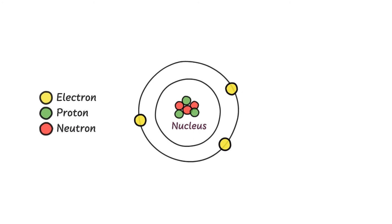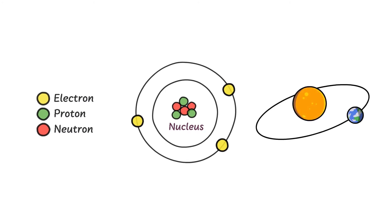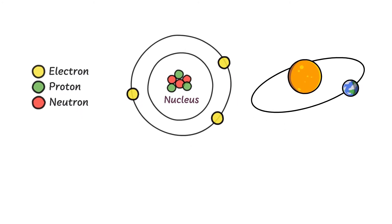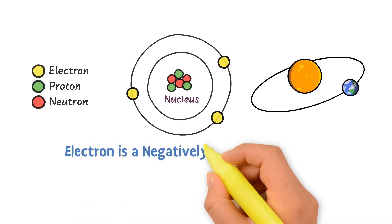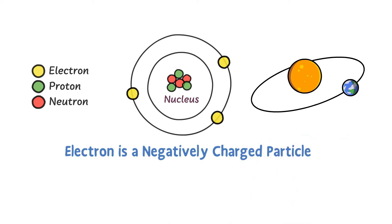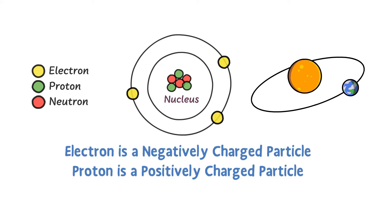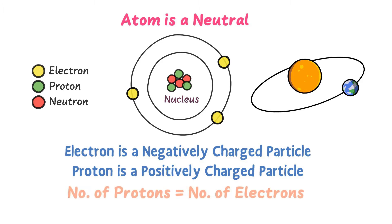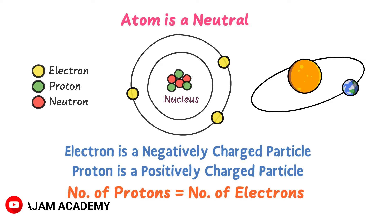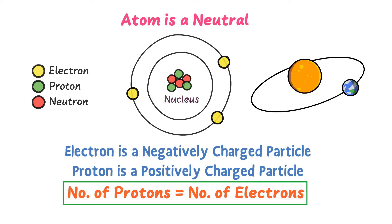These fixed paths are called shells, just like planets revolve around the sun. Remember that the electron is a negatively charged particle and the proton is a positively charged particle. An atom as a whole is electrically neutral because the number of protons is equal to the number of electrons inside any atom.